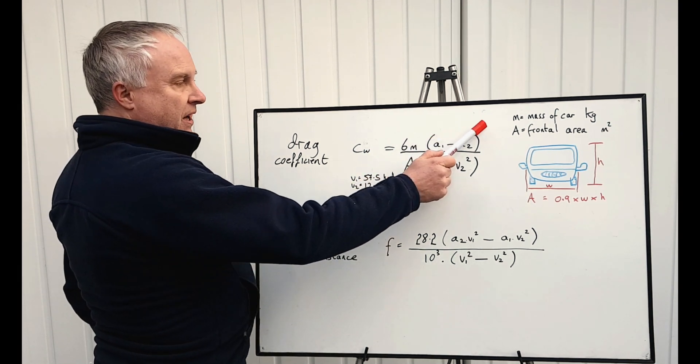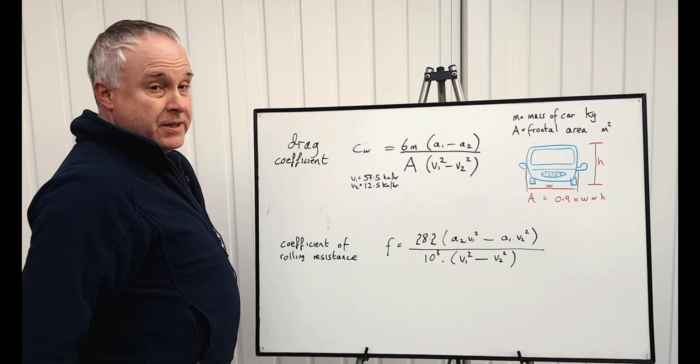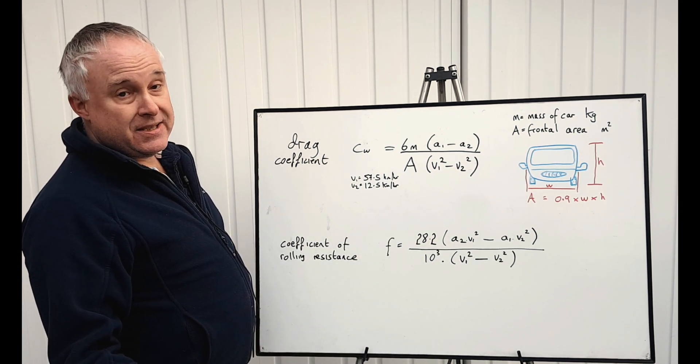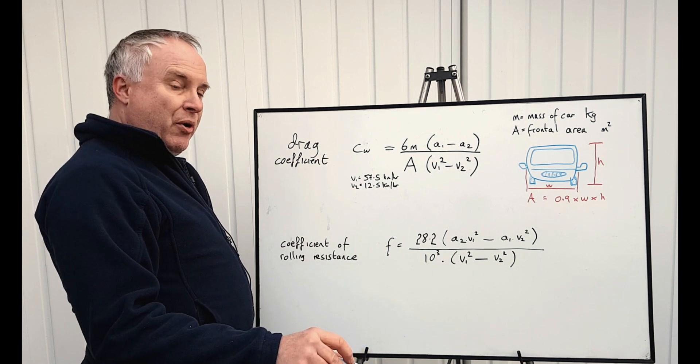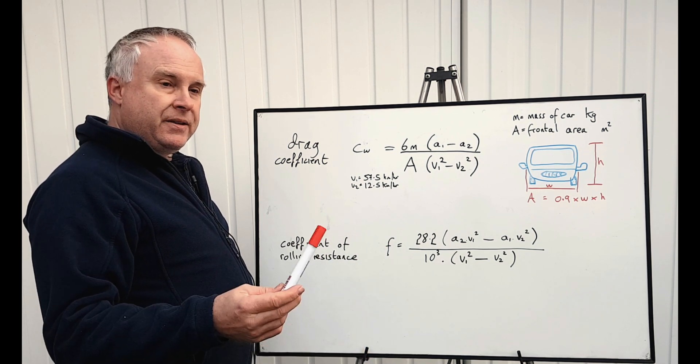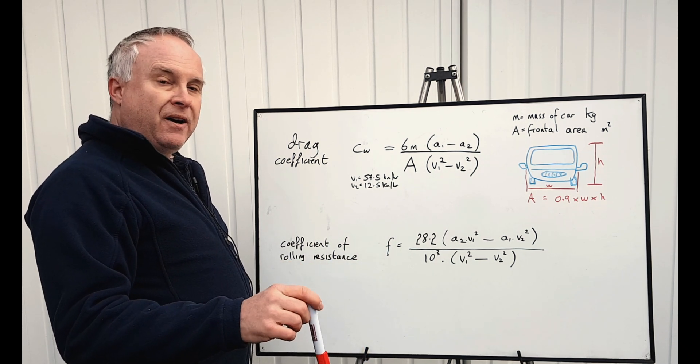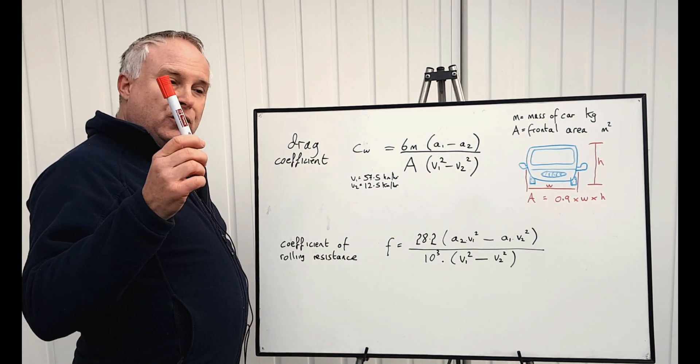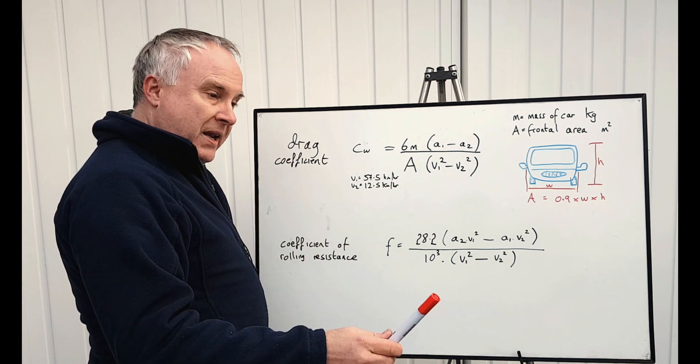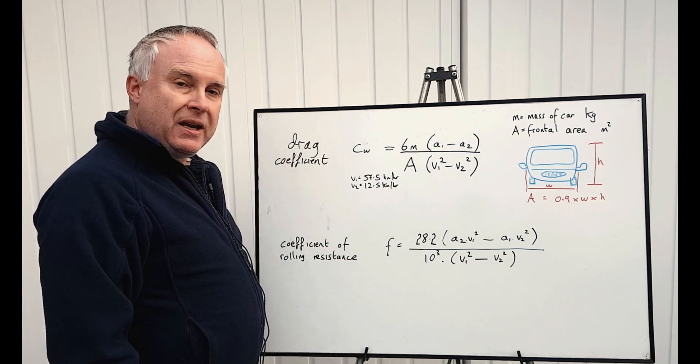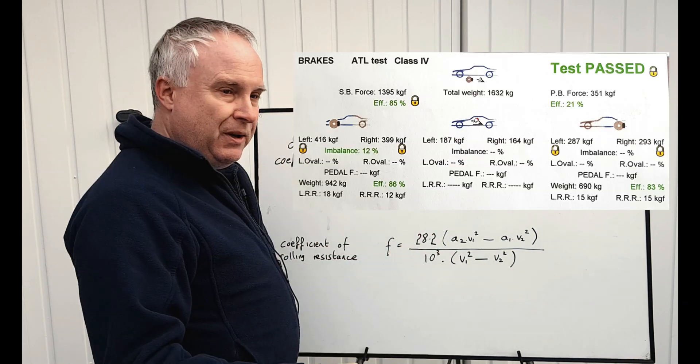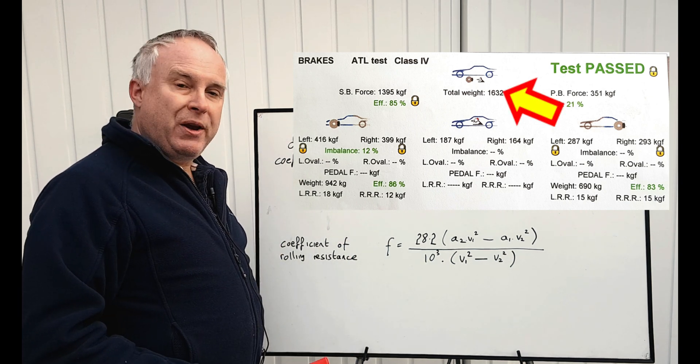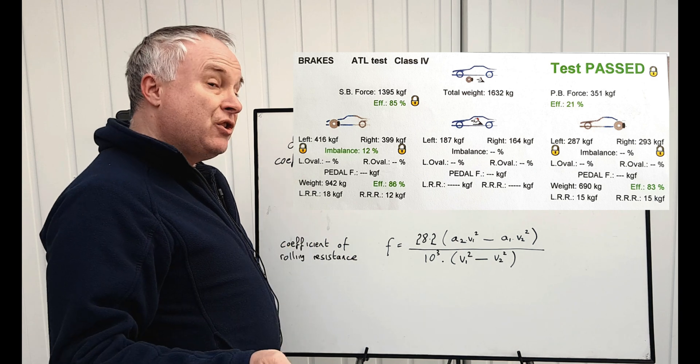For the mass of your car, in kilos, if you're in the UK, the MOT test includes a brake roller test. And the brake roller actually weighs the car to calculate the braking efficiencies, so you can get your car weight from your last MOT. Assuming, of course, that the MOT station actually gave you a printout of the brake roller test results, which they should have done.